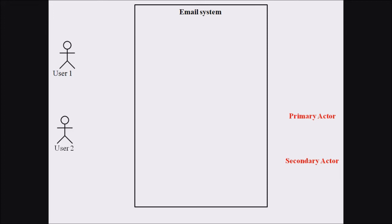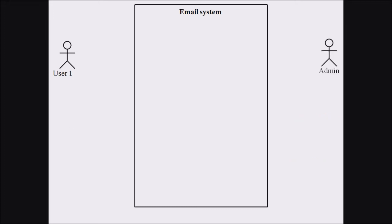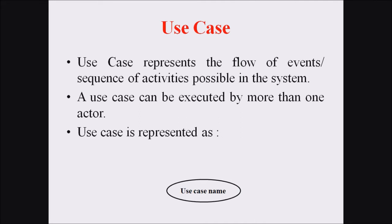Let us consider the actors in this email system. The email system has a user1 actor and a user2 actor. There are primary actors and secondary actors. Primary actors are generally represented on the left-hand side of a system, and secondary actors on the right-hand side. Here, user1 is the primary actor and admin is the secondary actor.